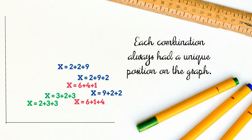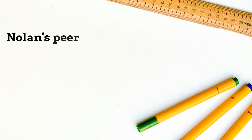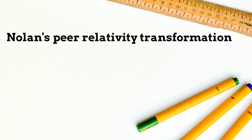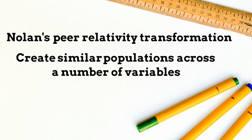Nolan's peer relativity transformation is all about generating stratifications and turning them into subpopulations. When combined with the digital hash, it can create similar populations across a number of variables. Stratification variables can be categorical or numeric.